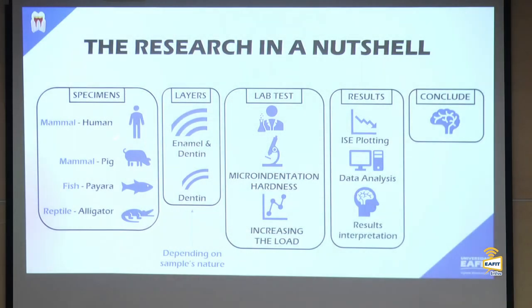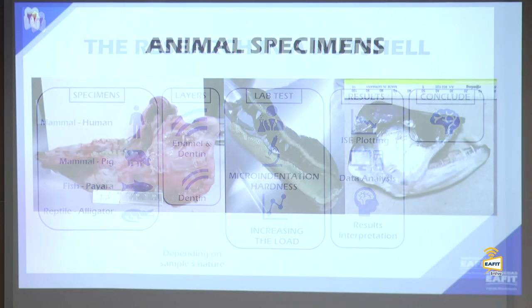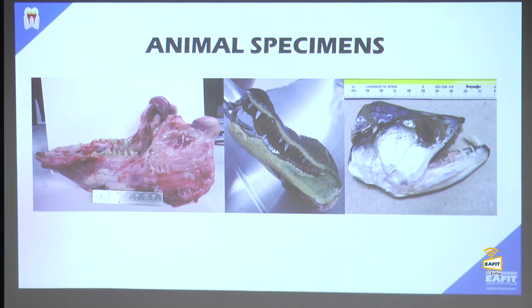In a nutshell, our approach was to work with three animal kingdoms: mammals (pigs/swine), fish (a species called payara), and reptiles (alligator). We also used human specimens for comparison. We evaluated dentine and enamel where we had more than 200 microns of enamel thickness, performed micro indentation hardness tests across increasing loads, plotted the indentation size effect chart, and analyzed the data.